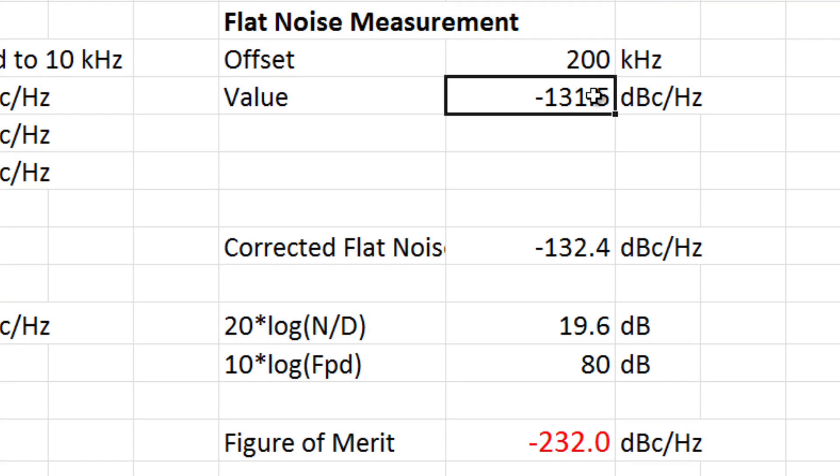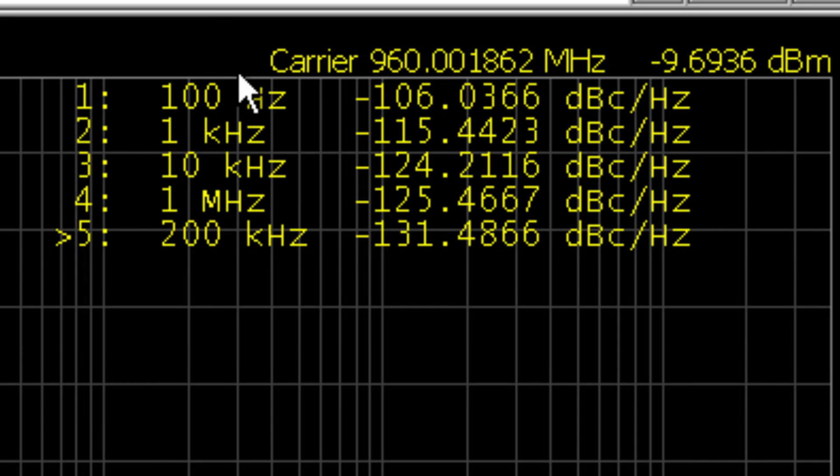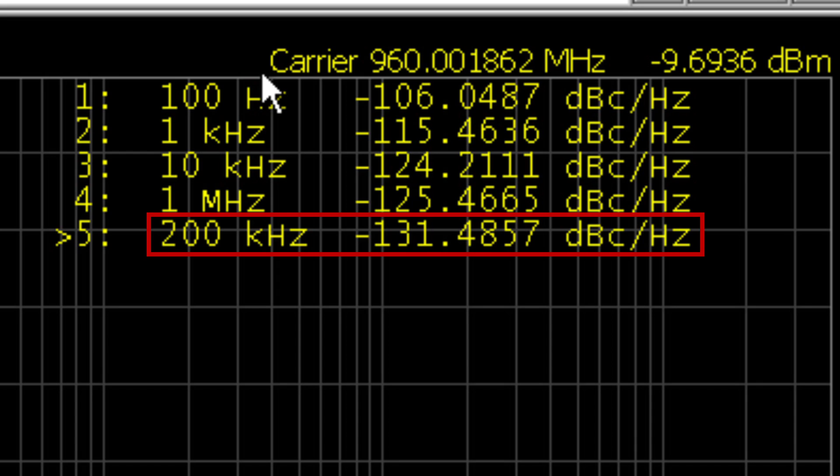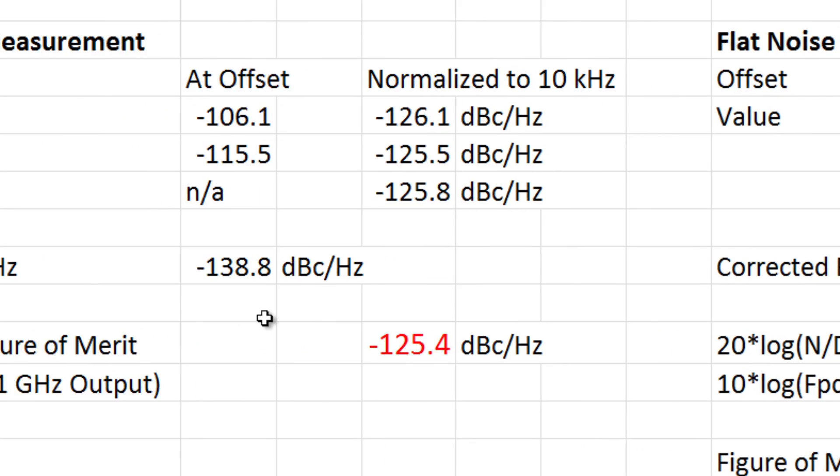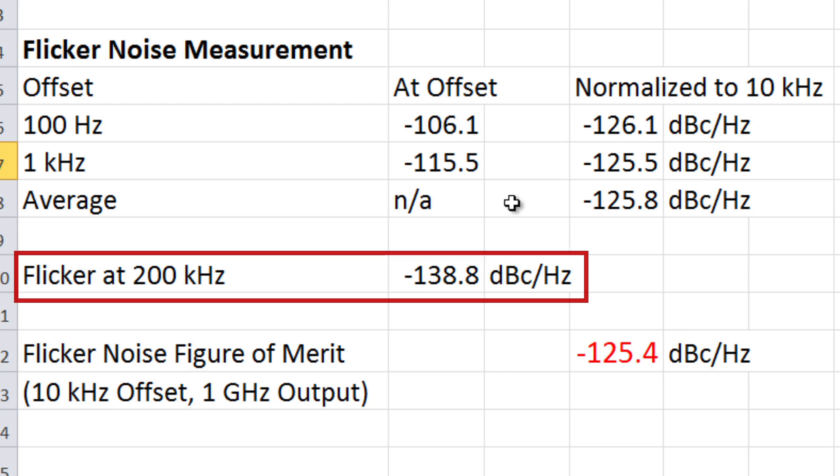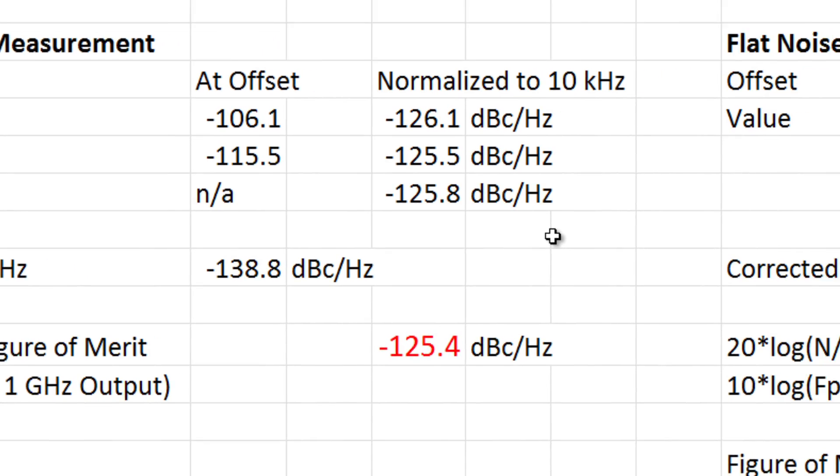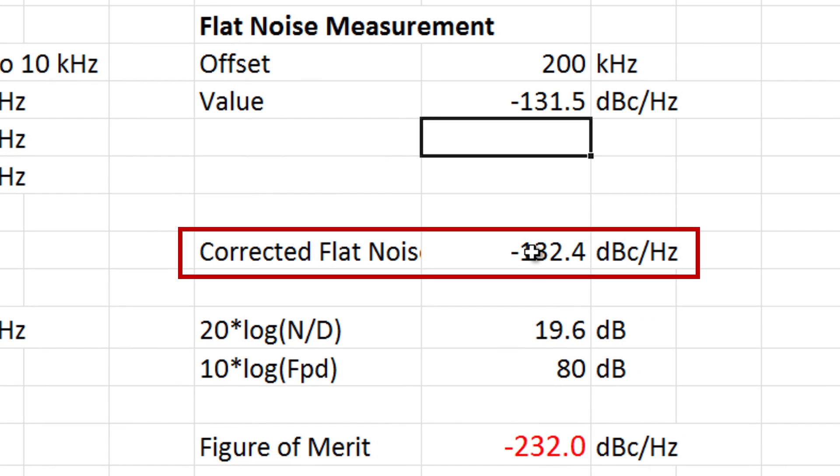Now if we look at the flat noise, let's go and clear this out and see what we get. So let's go to the flat noise here on our oscilloscope. At 200 kHz, I see a number of minus 131.5. So my raw number is minus 131.5. However, I did this side calculation to see what the flicker noise would be at 200 kHz offset, would be 138.8. So if I subtract away the flicker noise to just get to the raw flat noise, I actually get minus 132.4, which is 0.9 dB higher, just a small correction.